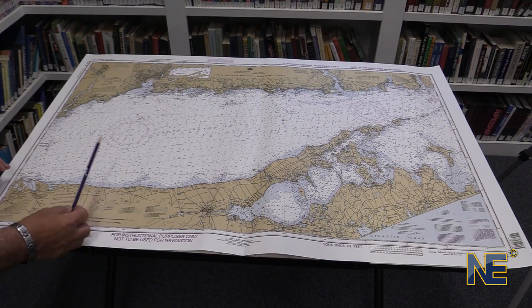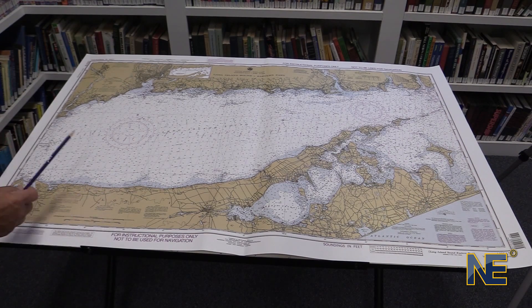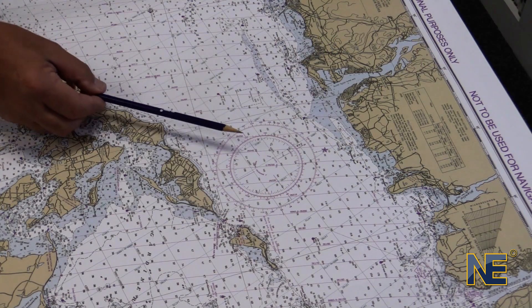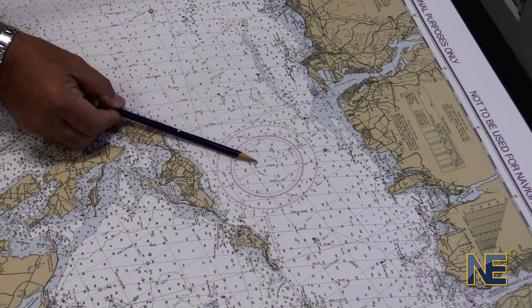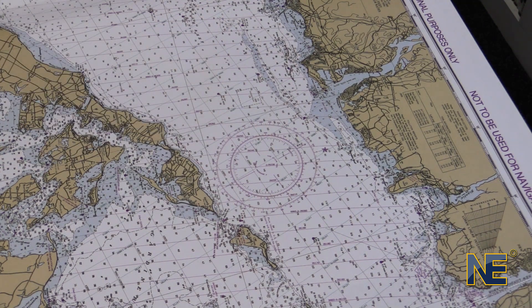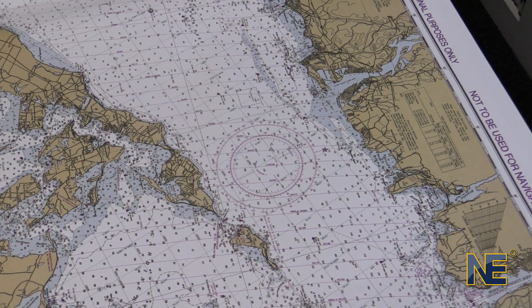Every chart will have a compass rose on it. Use the compass rose closest to where you are when you're plotting, and we'll talk about that in a little bit.